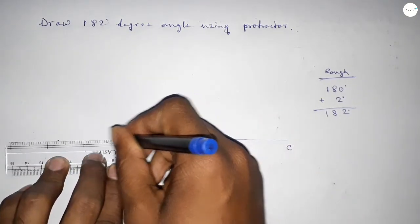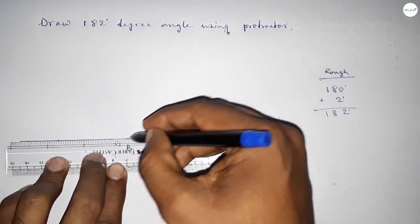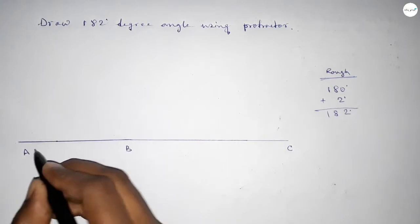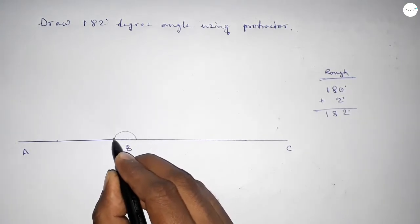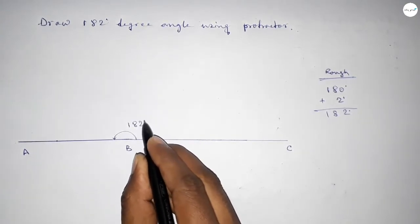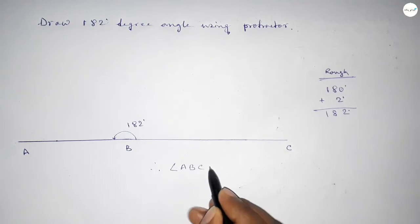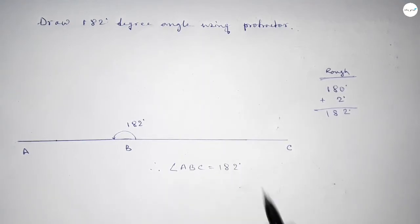Now we join the points and mark point A. Angle ABC measures 182 degrees. Therefore, angle ABC equals 182 degrees.